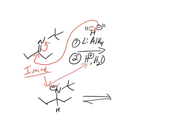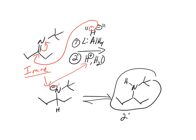Now we go to the second step, which just involves H⁺ — that's a protonation. So our final product is a secondary amine. A way to make secondary amines is from imines — you can make secondary amines from imines.